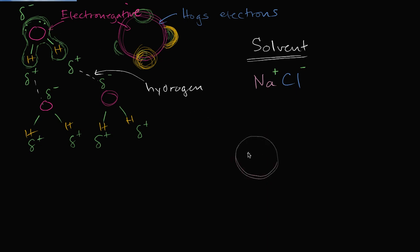Let's draw it out. The sodium has a positive charge, and the chloride has a negative charge. What's going to happen when you put sodium chloride inside of water? Well, the negative ends of the water molecules are going to be attracted to the sodium ion.